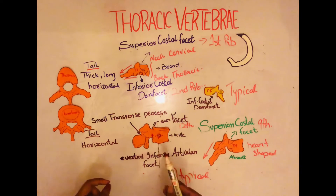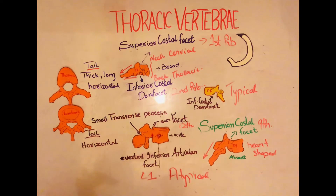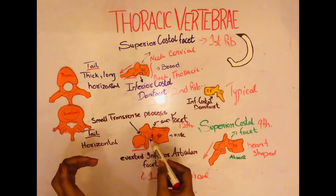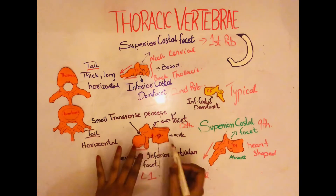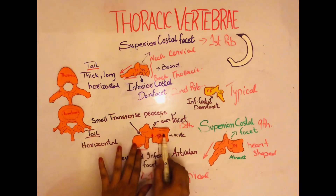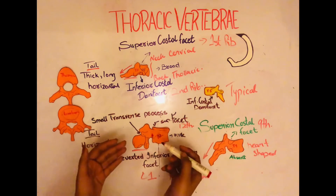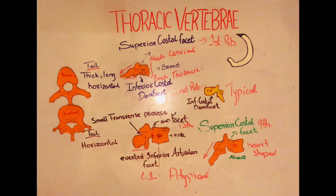The T12 vertebrae has an averted inferior articular facet, because of the attachment to L1, which is the subsequent lower lumbar vertebrae. The pedicle of T12 is horizontal, with a small transverse process. As we go downward from thoracic to lumbar, the superior portion of T12 is designed to match with the thoracic vertebrae above it, whereas the inferior portion is designed to attach with the lumbar vertebrae.